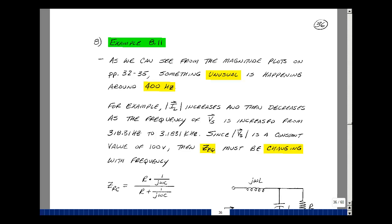In our last video, we looked at an RLC circuit and plotted its magnitude and angle of various voltages and currents versus frequency. There was something unusual happening around 400 Hz.